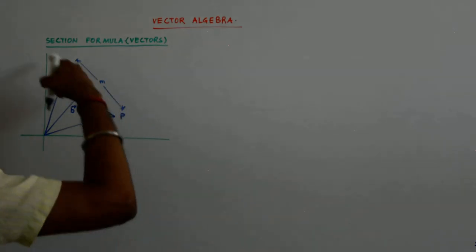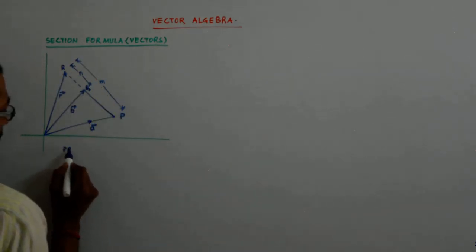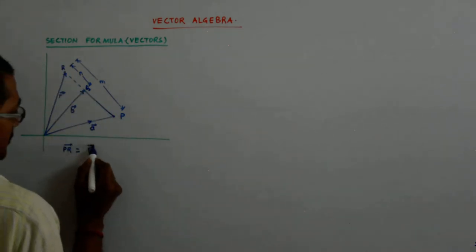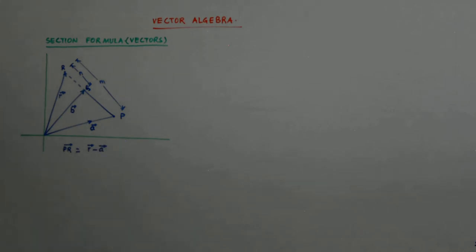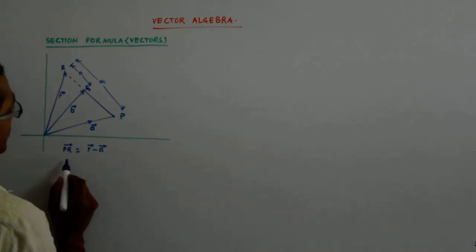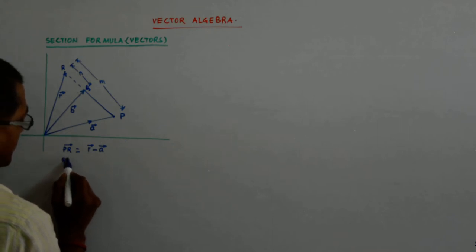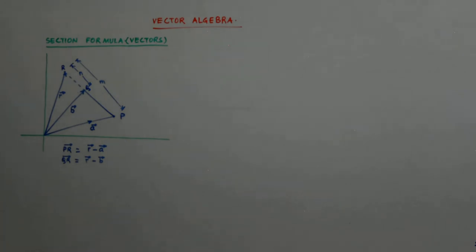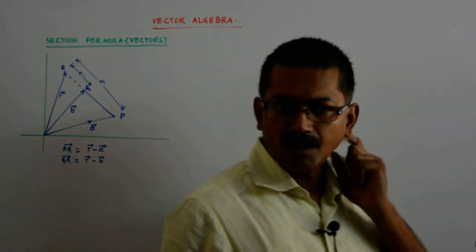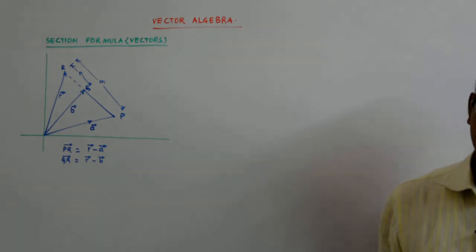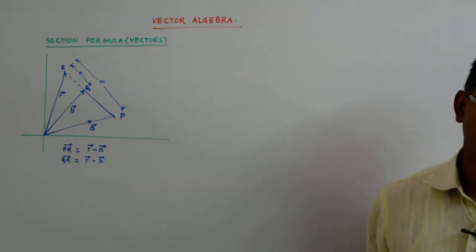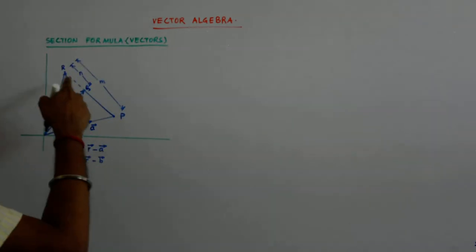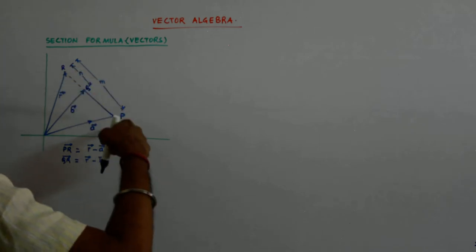Either you take the vector PR, so PR is what? PR is vector PR is R minus A. What is vector QR? It is R minus B. R minus A, R minus B.